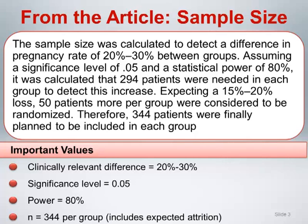Because this trial follows subjects over time, it is appropriate to consider the impact of subject attrition and incorporate this into the formal sample size calculation. For now, we are just interested in looking at the individual elements that go into a sample size calculation.